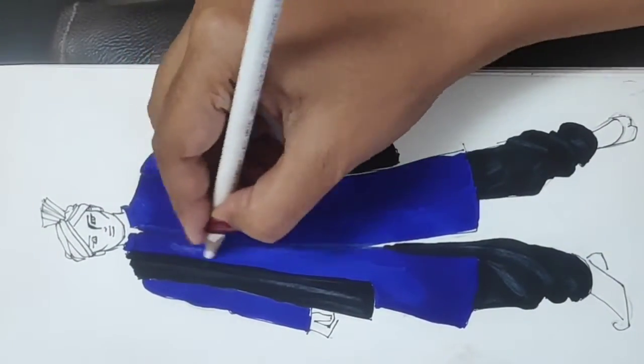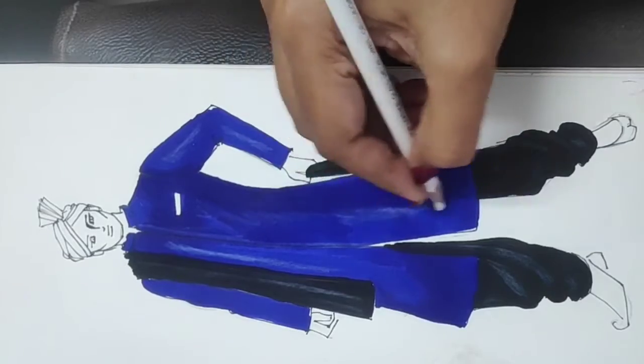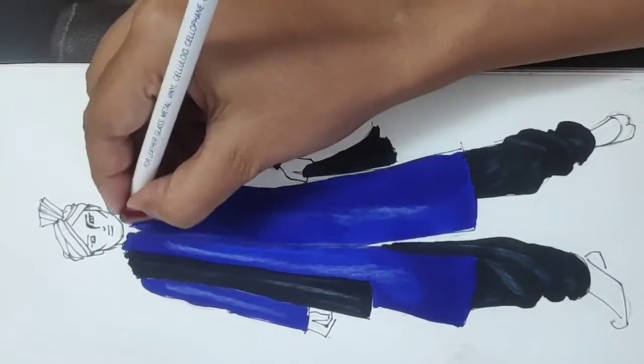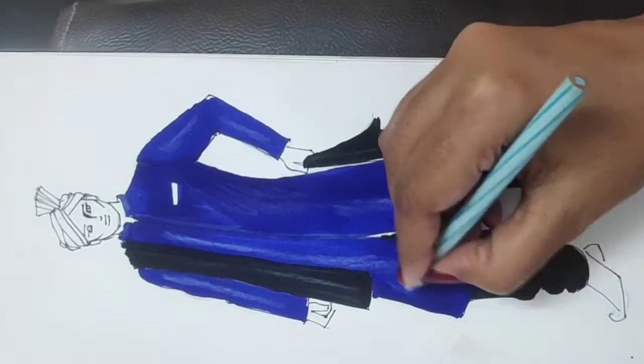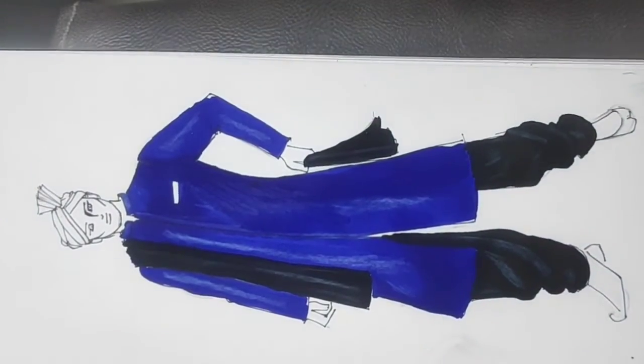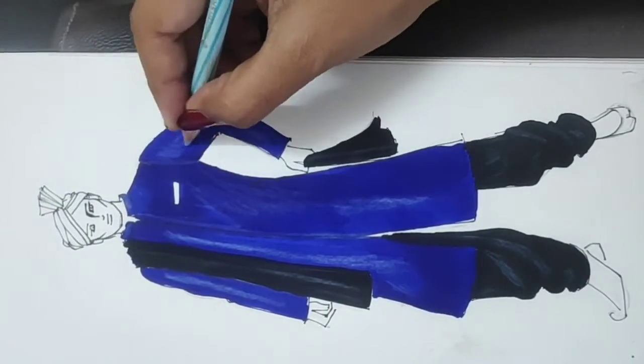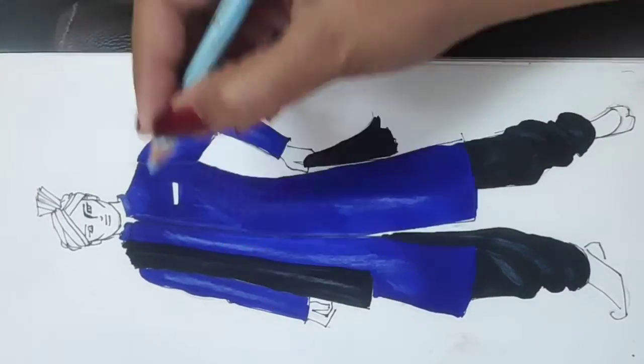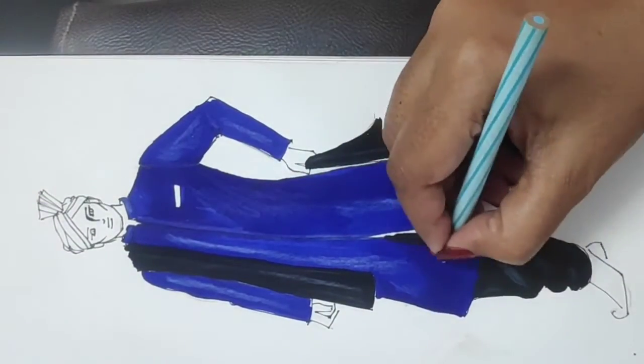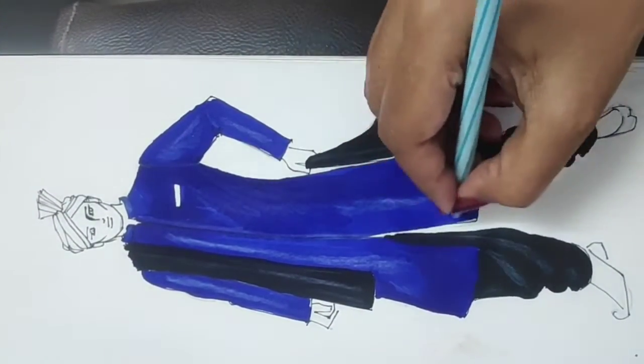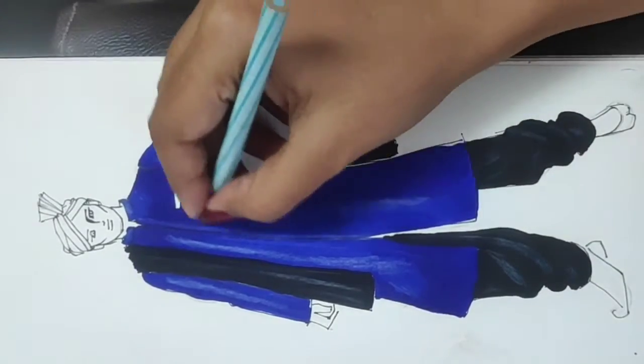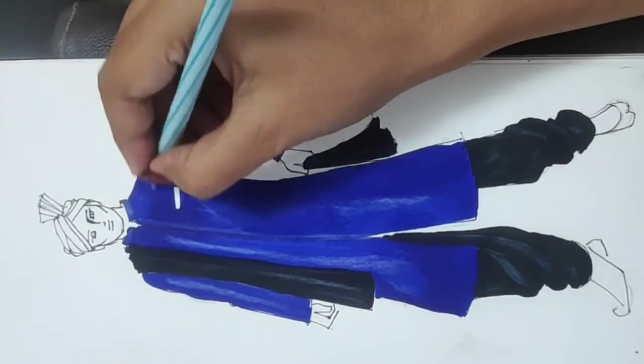For black I'm using white, for blue also I'm using white and a bit of light blue to give the shadow effect. You can do embroidery, jacquard print, or whatever pattern you want, but here I've tried to keep it as simple as possible. I'm just giving a little texture.